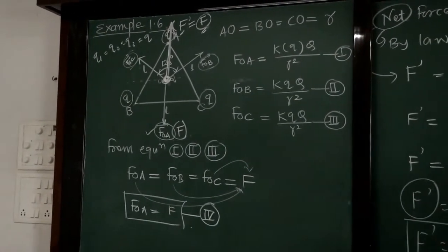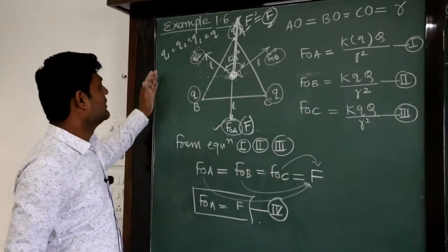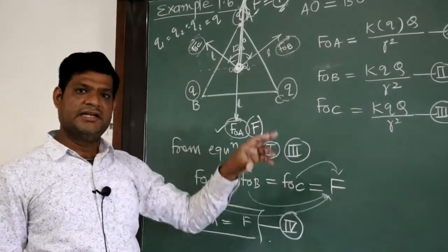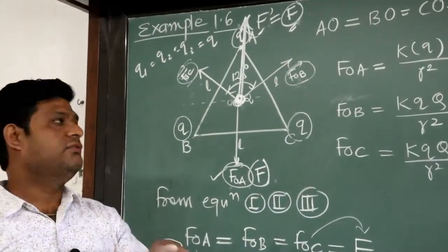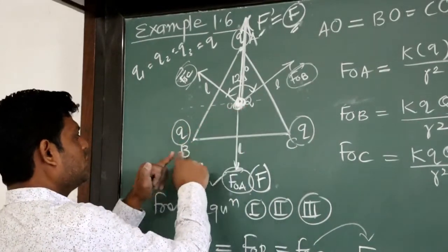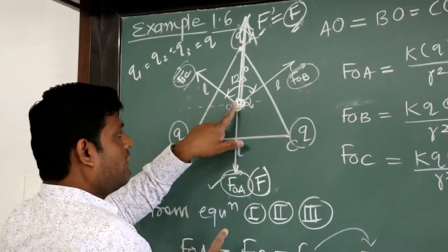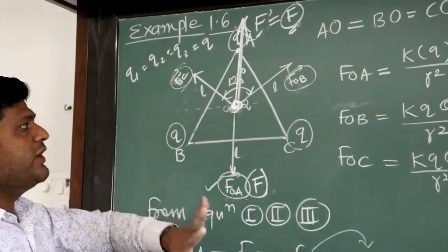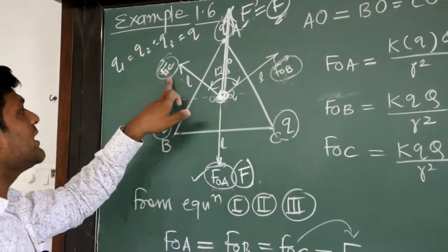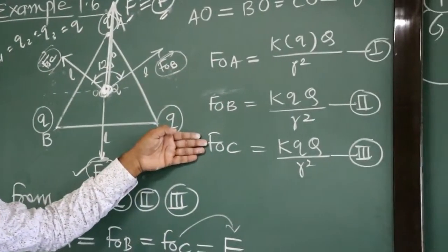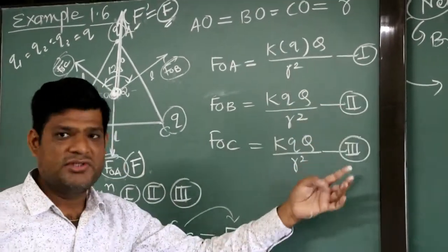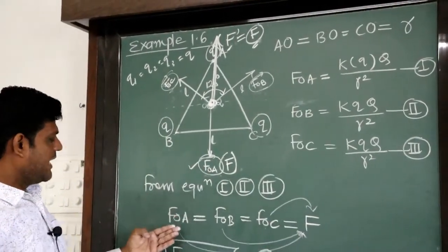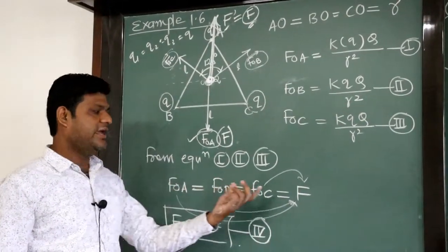Revising the numerical: on the vertices of the equilateral triangle the charges are kept. At the center, capital Q charge is kept. The question is to find the force acting on the center. Forces FOA, FOB, and FOC are all equal in magnitude since the equations are the same — so we denote them all as F.